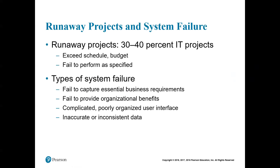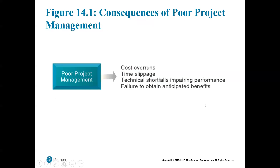We've talked all semester about how key good data is — bad data breaks systems. If we're not managing projects properly, and we'll see techniques like the Gantt chart to manage projects where we organize resources, deliverables, deadlines, and cost — if we don't do all those things properly, we're going to have a system that costs too much, takes too long, doesn't meet performance measures, and doesn't give us the benefits we need. So if we can't manage those four things, why put a system in place at all?